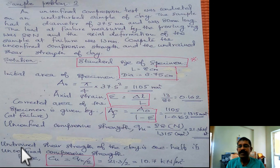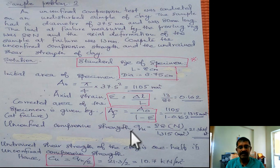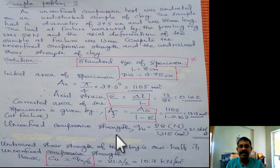Undrained shear strength of the clay is actually half of unconfined compressive strength. Once you get the unconfined compressive strength, you divide it by 2, you will easily get the undrained shear strength. In this case it is 10.7 kilo Newton per meter square and this is the answer.